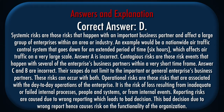Answer A is incorrect. Contagious risks are those risk events that happen with several of the enterprises' business partners within a very short time frame. Answers C and B are incorrect. Their scopes do not limit to the important or general enterprises' business partners. These risks can occur with both. Operational risks are those risks associated with day-to-day operations of the enterprise — the risk of loss resulting from inadequate or failed internal processes, people and systems, or from external events. Reporting risks are caused due to wrong reporting which leads to bad decisions, causing a risk on the functionality of the organization.